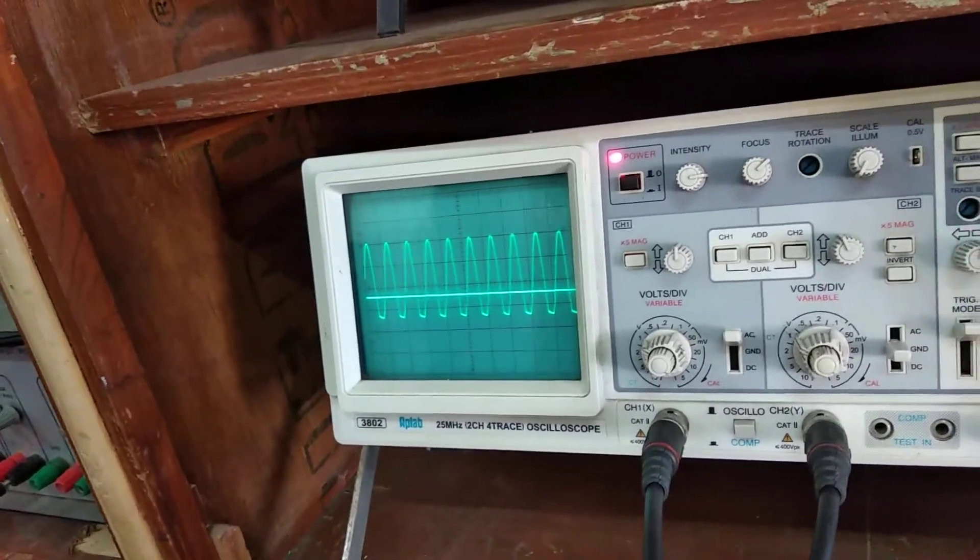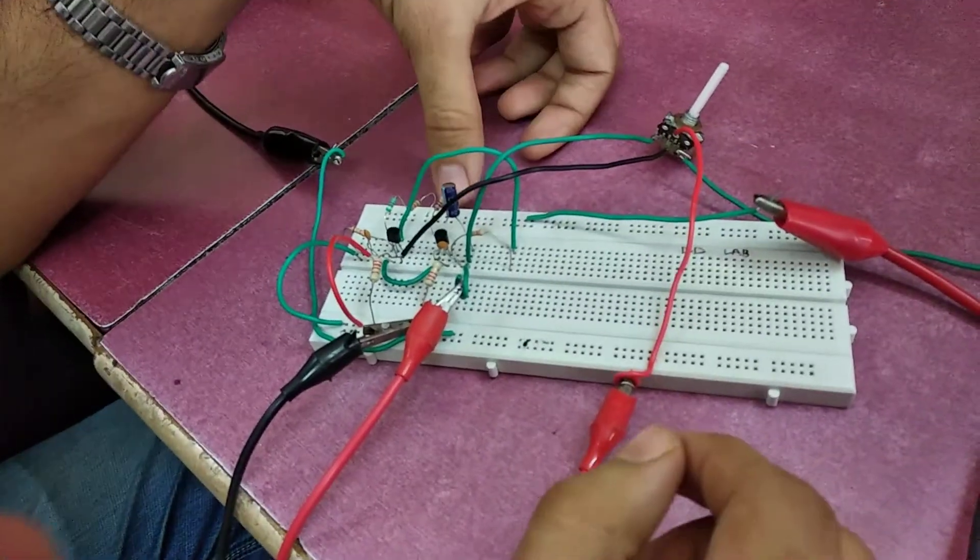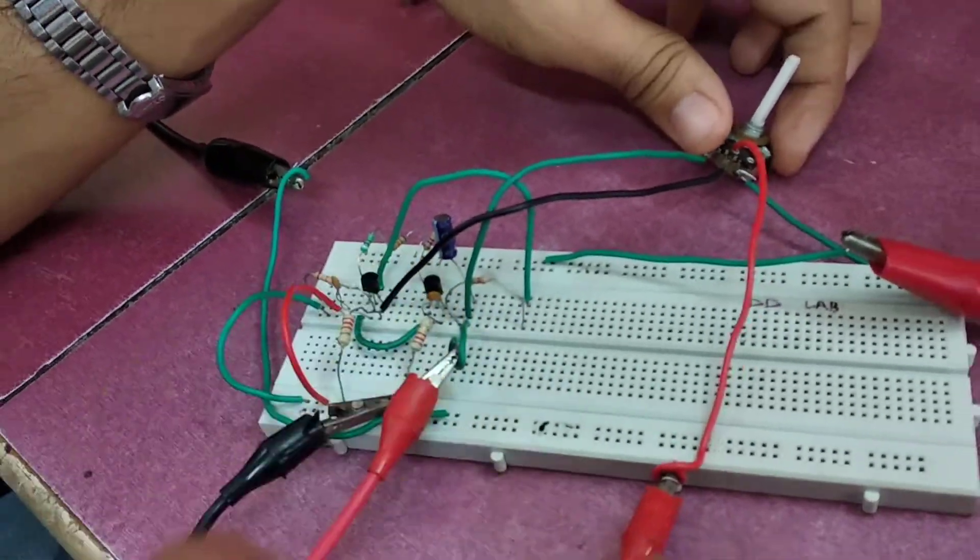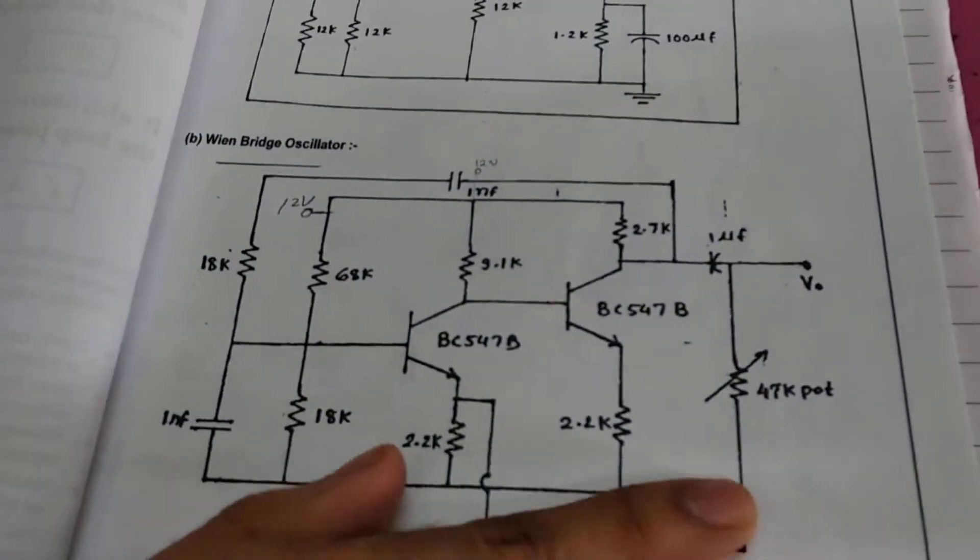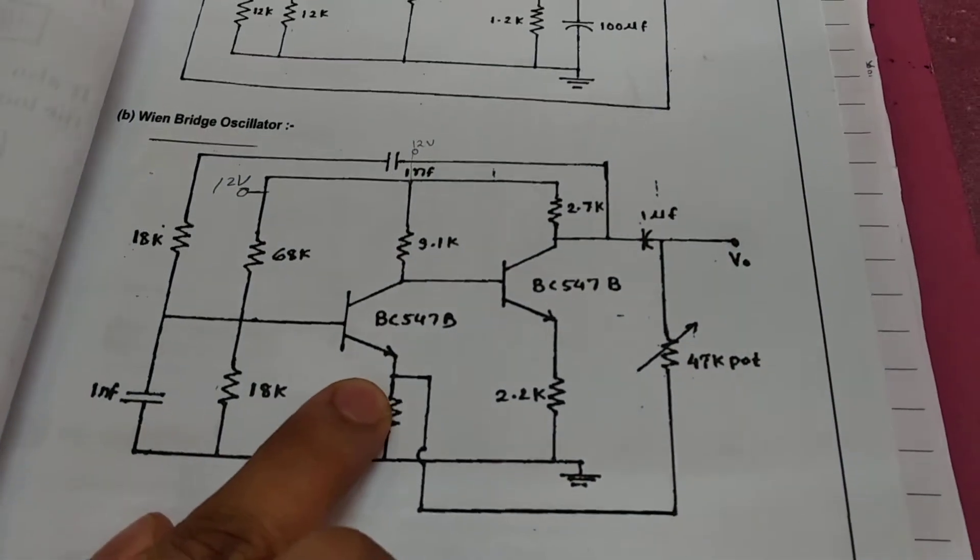Now we need to start with the feedback signal. For feedback signal, what we do is we have this potentiometer in the circuit as a feedback signal. So this is our output voltage and this is our feedback voltage at this point.